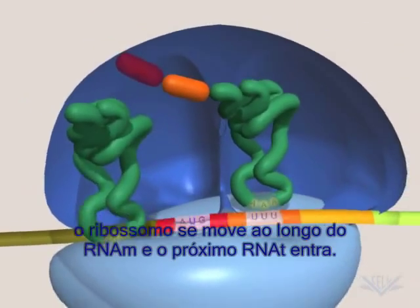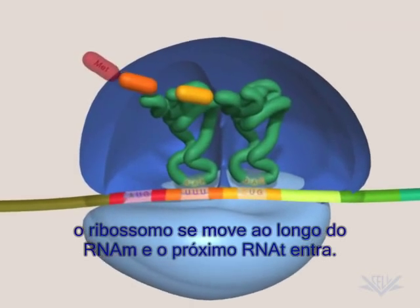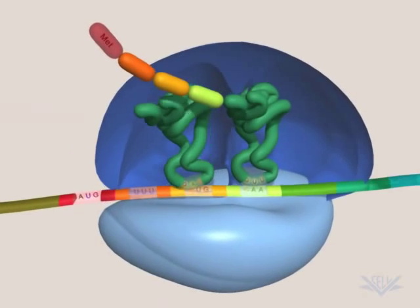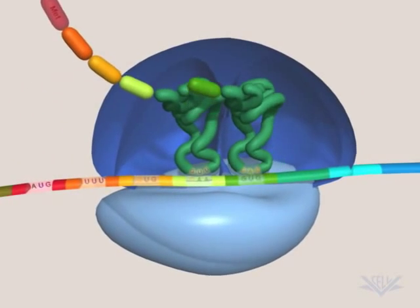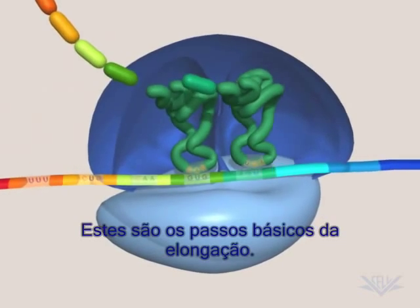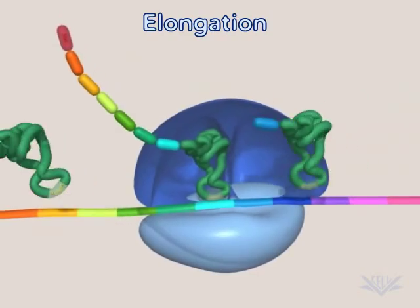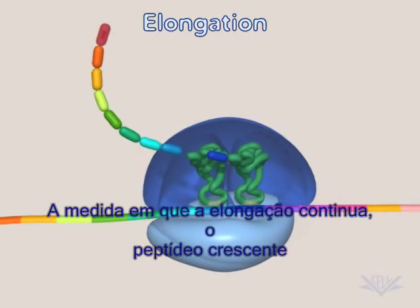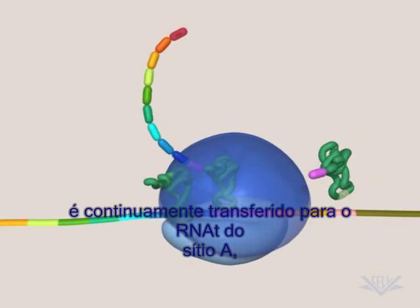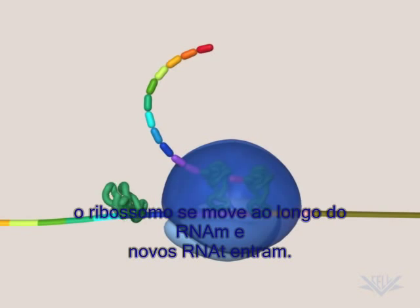The first tRNA exits, the ribosome moves along the mRNA, and the next tRNA enters. These are the basic steps of elongation. As elongation continues, the growing peptide is continually transferred to the A-site tRNA, the ribosome moves along the mRNA, and new tRNAs enter.